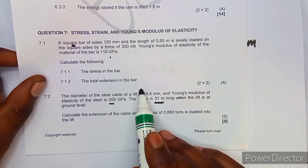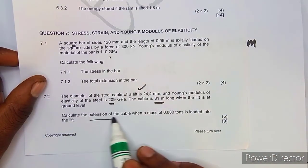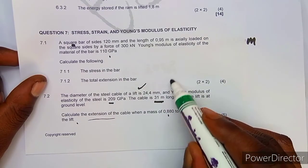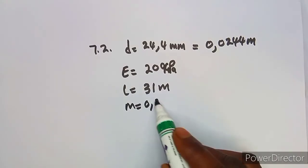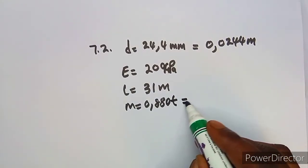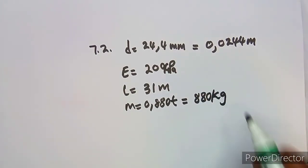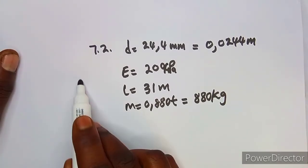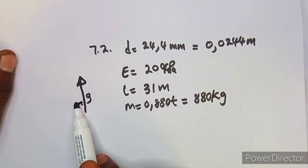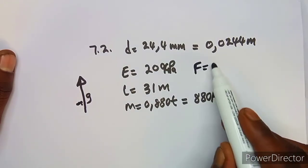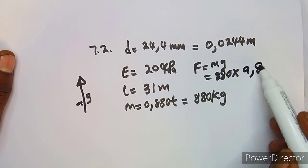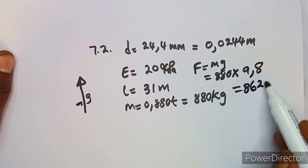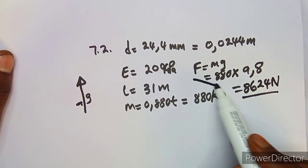We need to calculate the extension of the cable when the lift is loaded. Take note this lift is going upwards, so we use gravitational acceleration. The mass of the lift is 0.880 tons, which is 880 kilograms. The force is weight: mass times g, so 880 times 9.8, giving 8624 newtons.